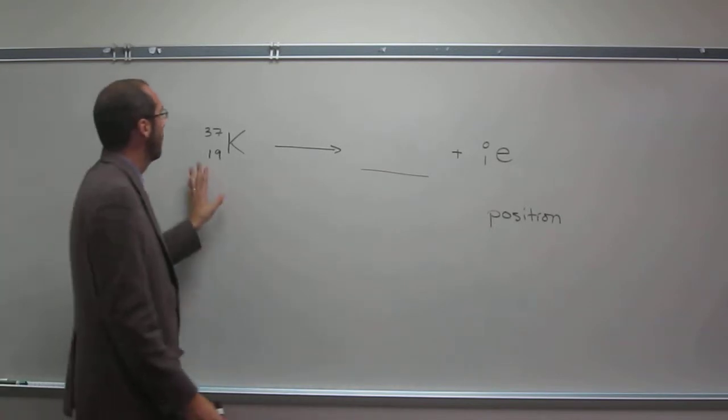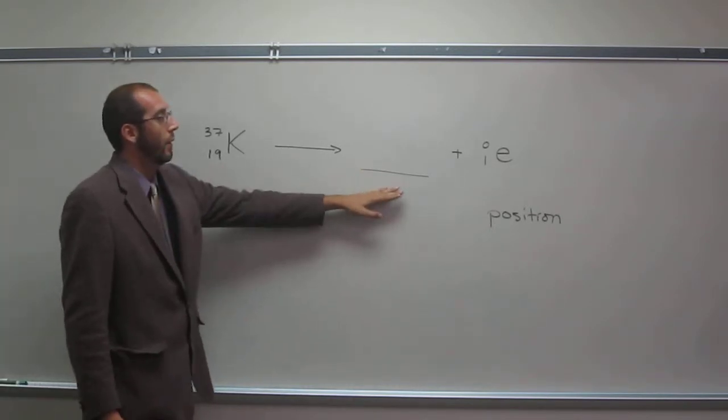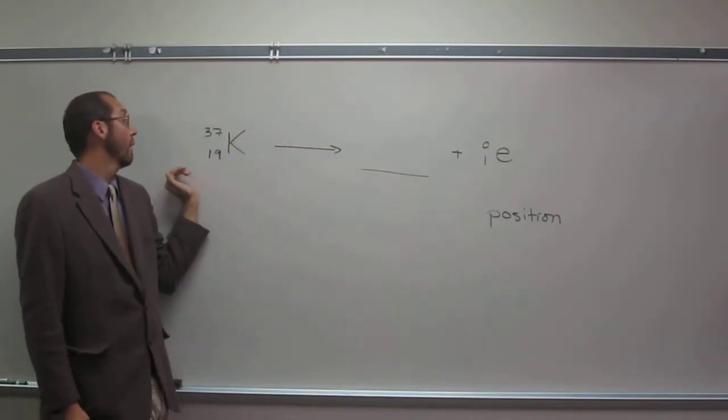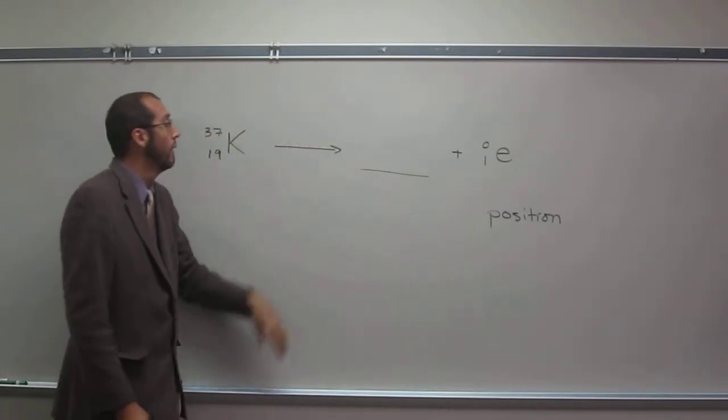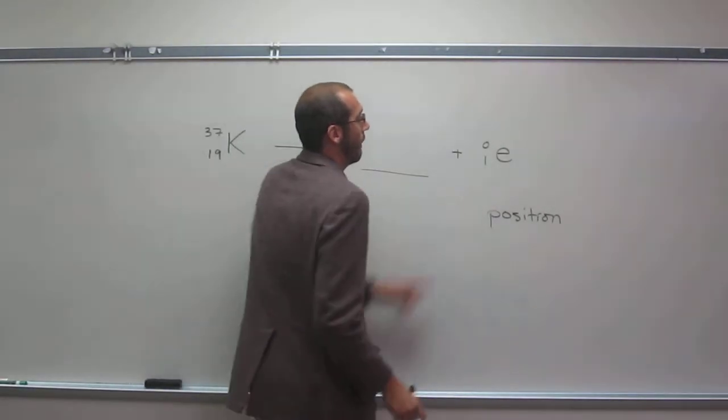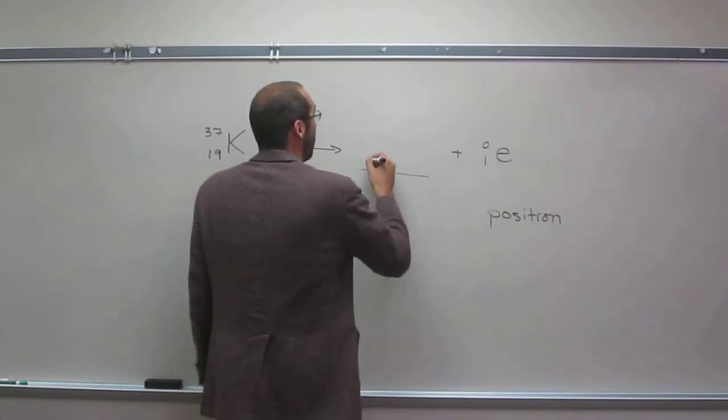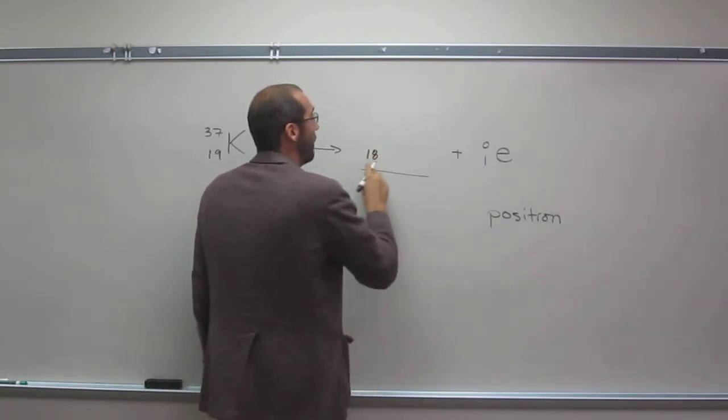OK, so here we've got to add up the masses to 37 and the protons to 19. Here we've got a plus one charge, so this is going to be 18.